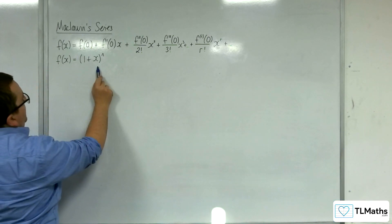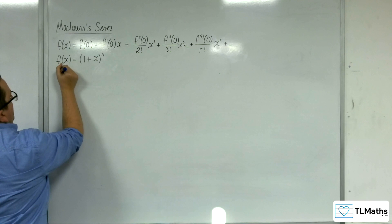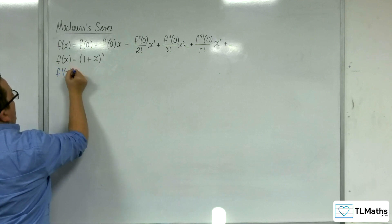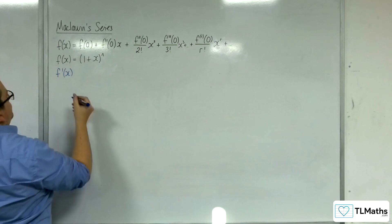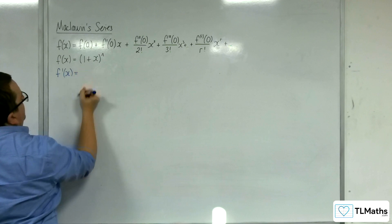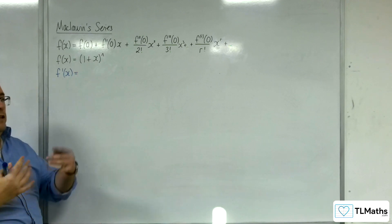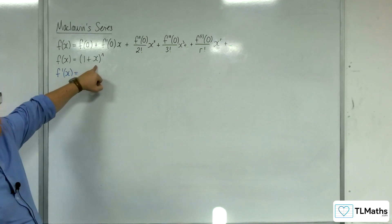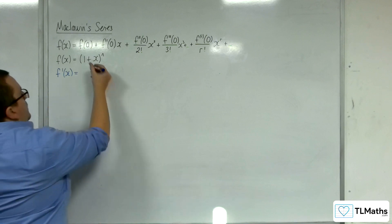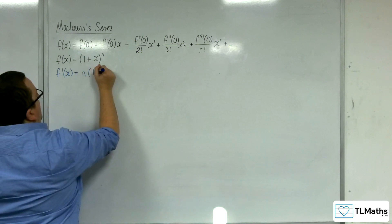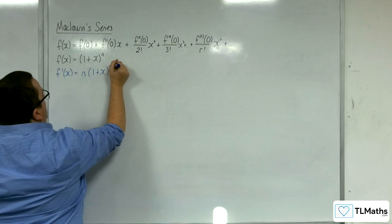Starting off with f of x equals that, I'm going to keep on differentiating this to get the required terms. So f prime of x, we're going to use the chain rule. The derivative of the interior here is just going to be 1, so the derivative is just n times 1 plus x to the n minus 1.